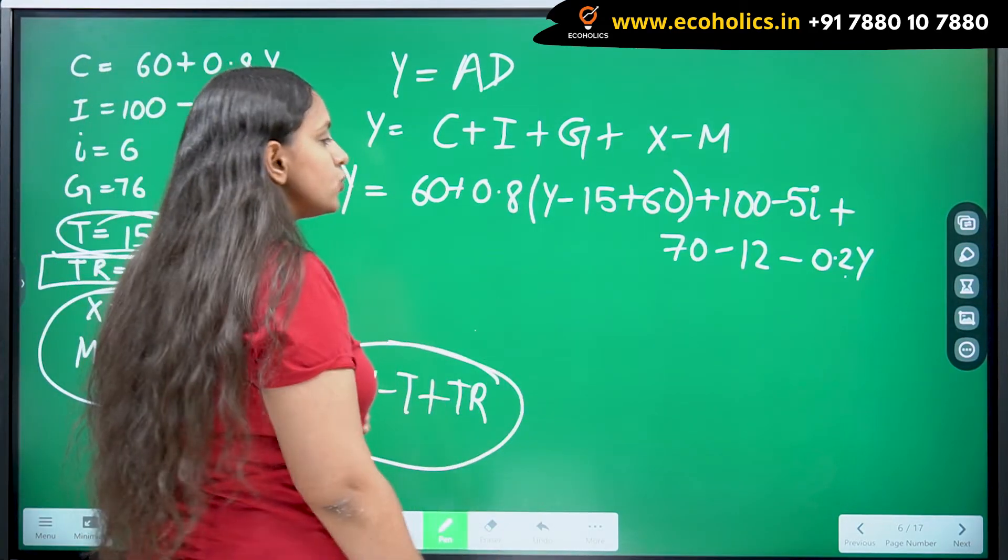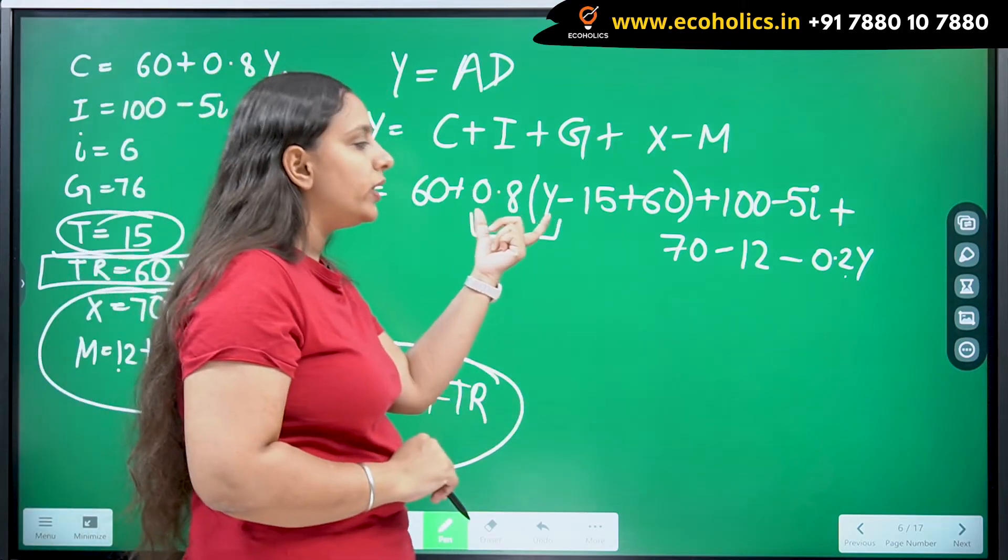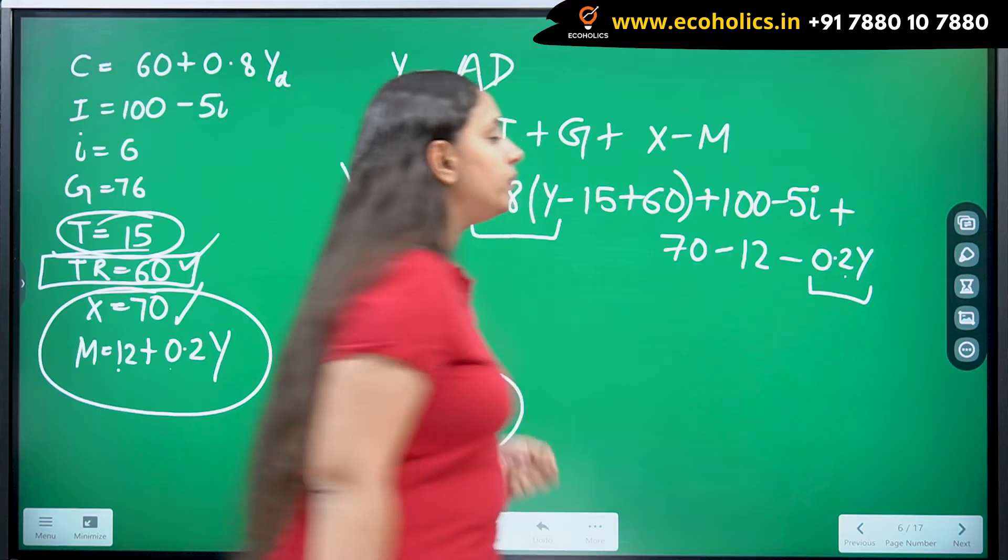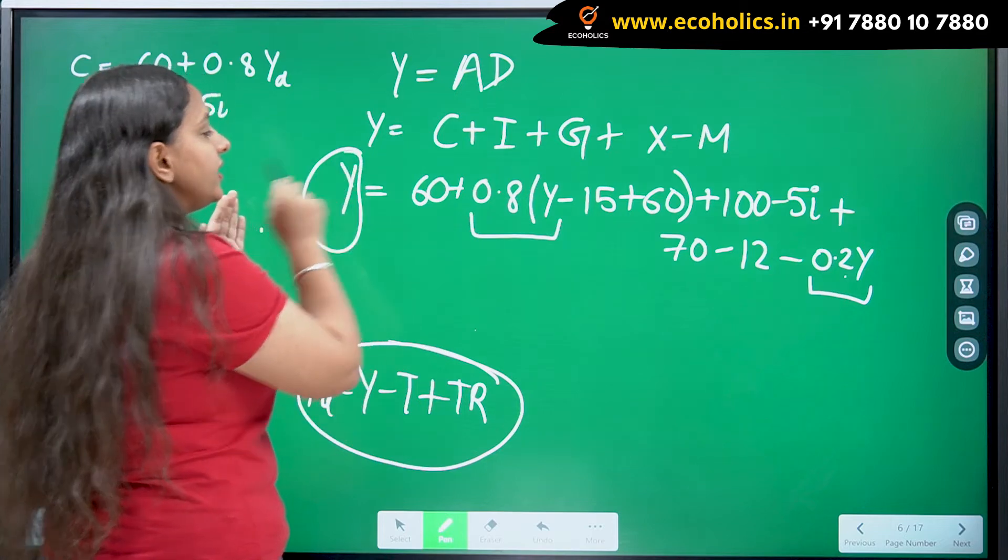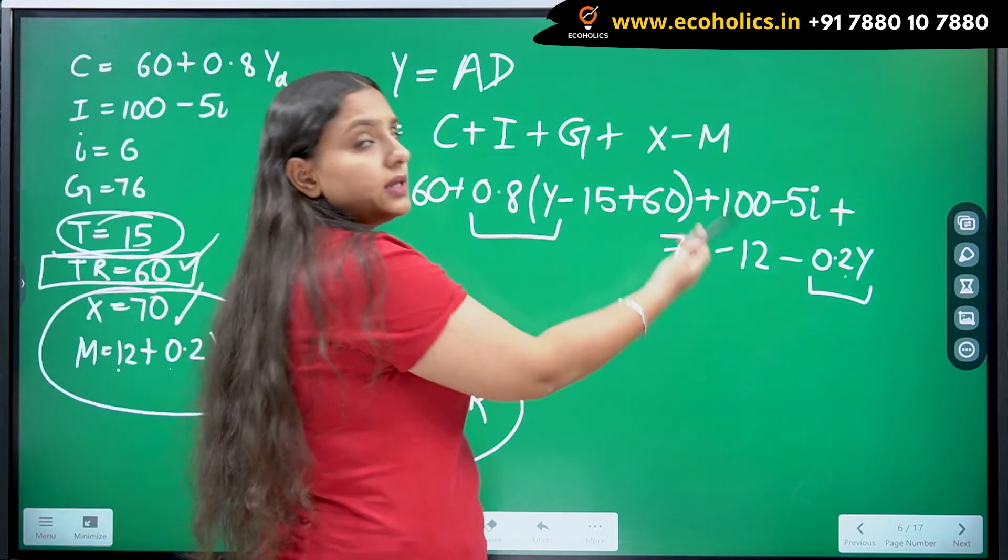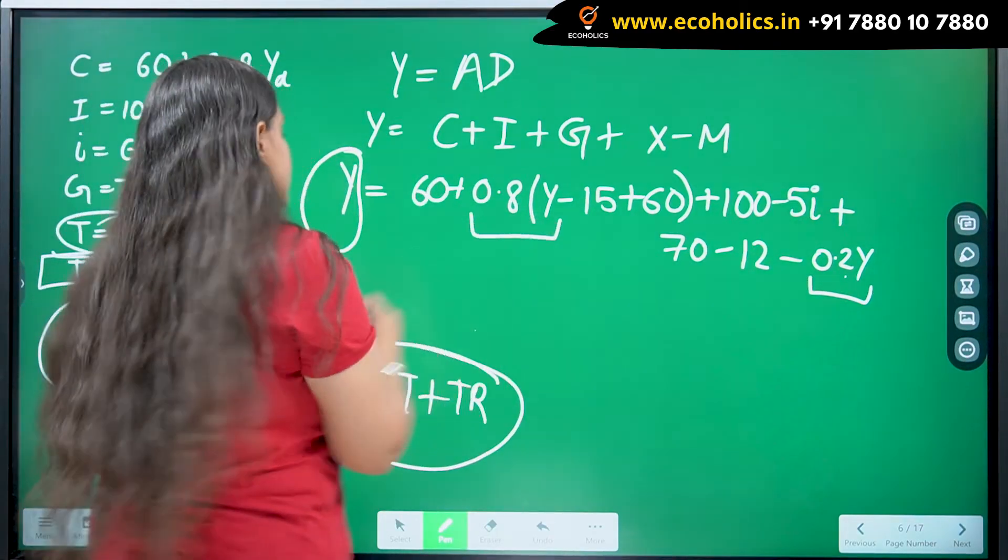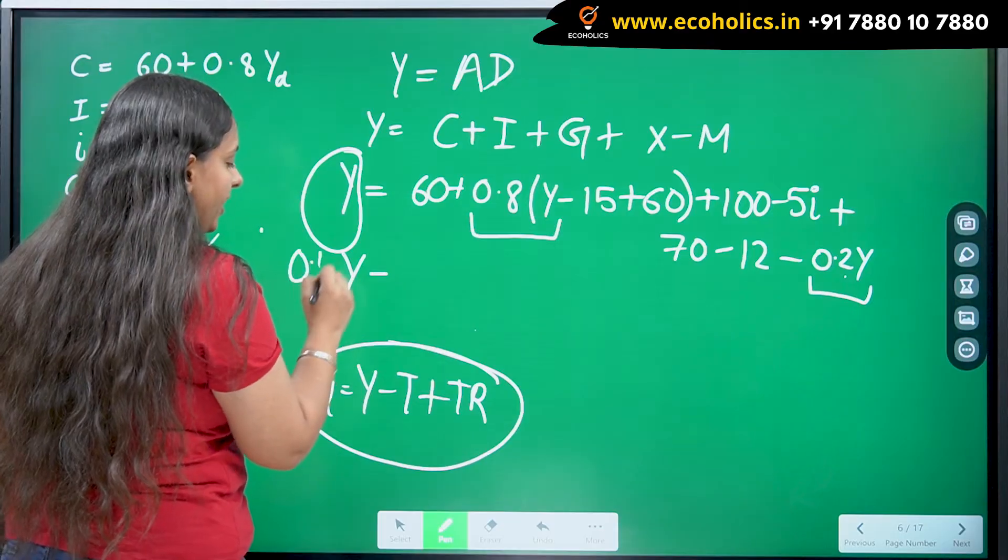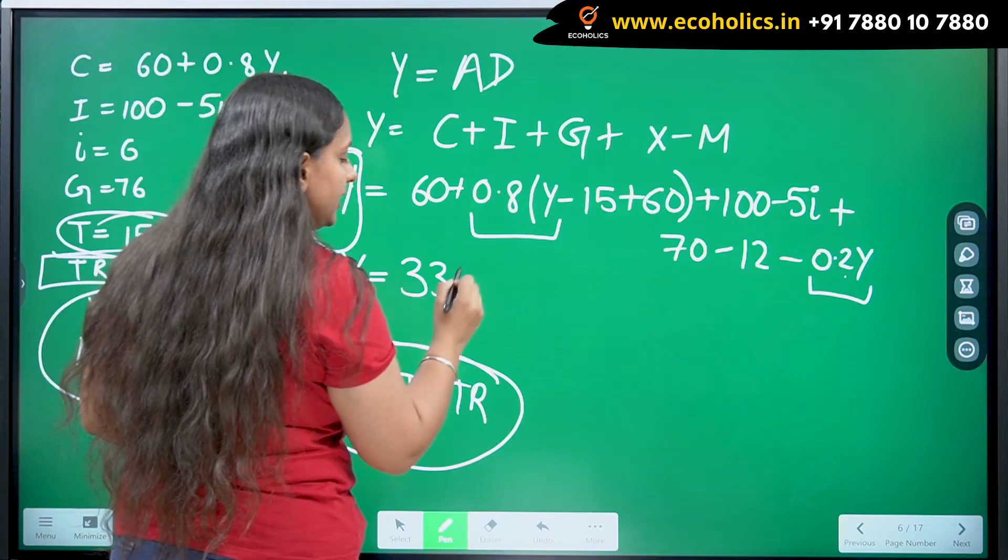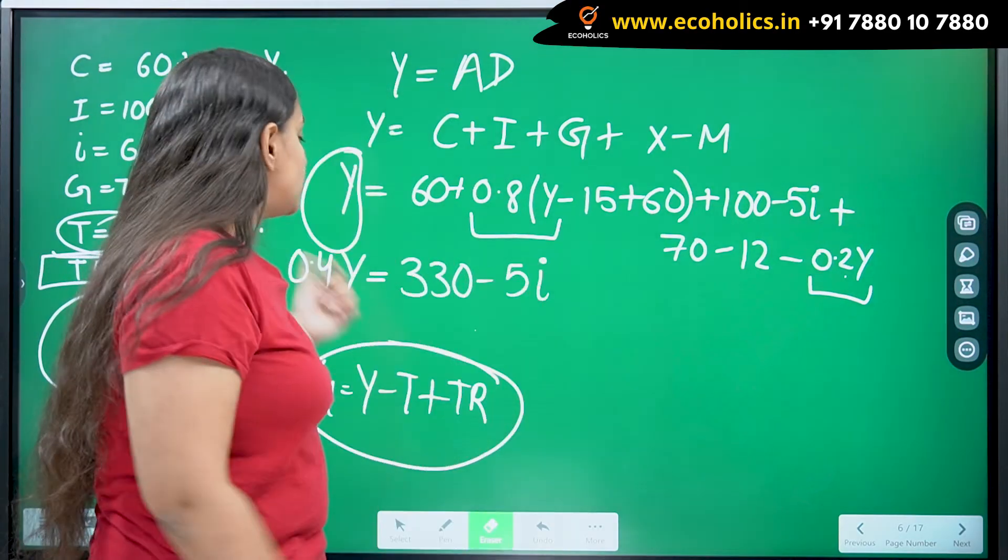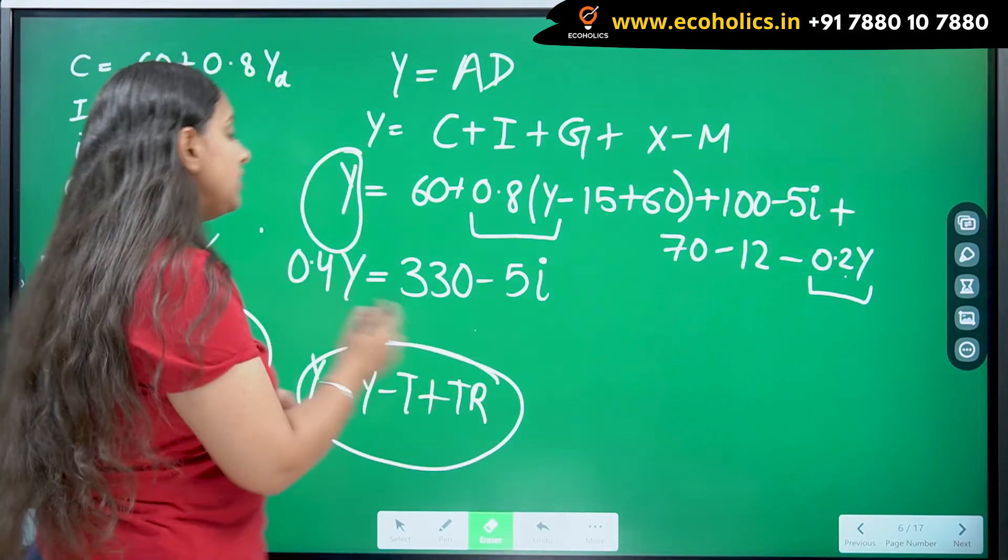Now, we have substituted all these values. I am going to solve it. All the values which will be related to Y, like here I am going to get 0.8Y. Here I am getting 0.2Y. I will be taking them to the other side, so I will be collecting the Y terms on the left-hand side and I will be keeping the i related terms and the constant terms on the right-hand side. After this, I will be getting Y, 0.4Y actually, equals to 330 minus 5i. I have got this thing now but I want an equation for the IS curve.